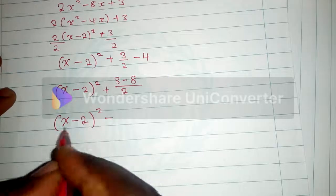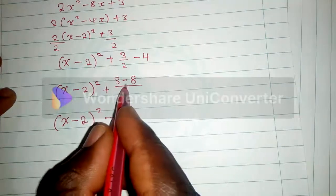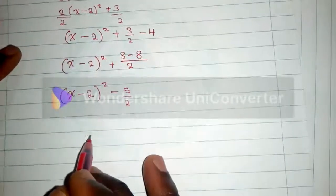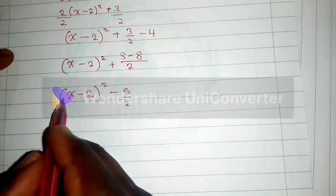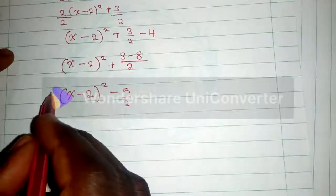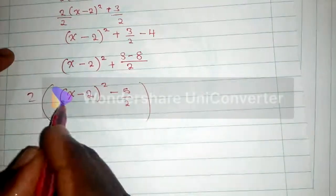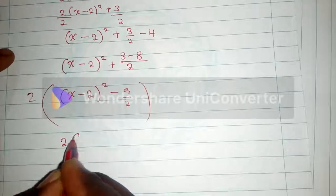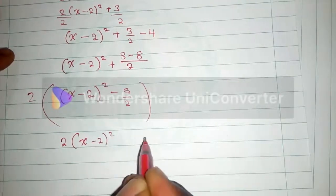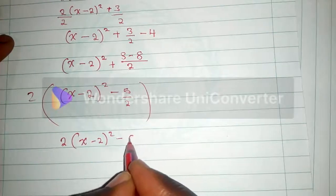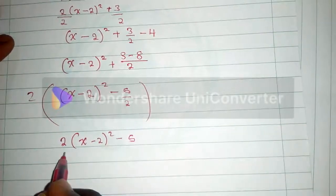Here it will be negative 5 over 2. Thereafter, you can multiply throughout by 2, so when you distribute the 2, it goes here to (x - 2)², and here it will be 5. This 2 remains like this.